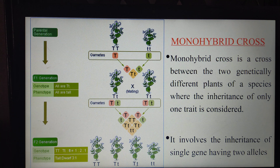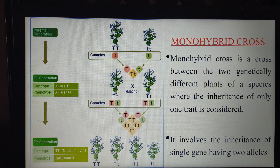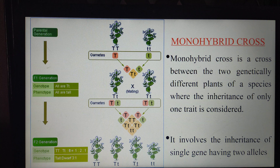If the same cross is performed by considering two characters, then it is said to be a dihybrid cross. If three characters are considered, then it is said to be a trihybrid cross. Like that, it goes on. So always in monohybrid cross, any one character is considered — that alone is studied. That is why it is called a monohybrid cross.